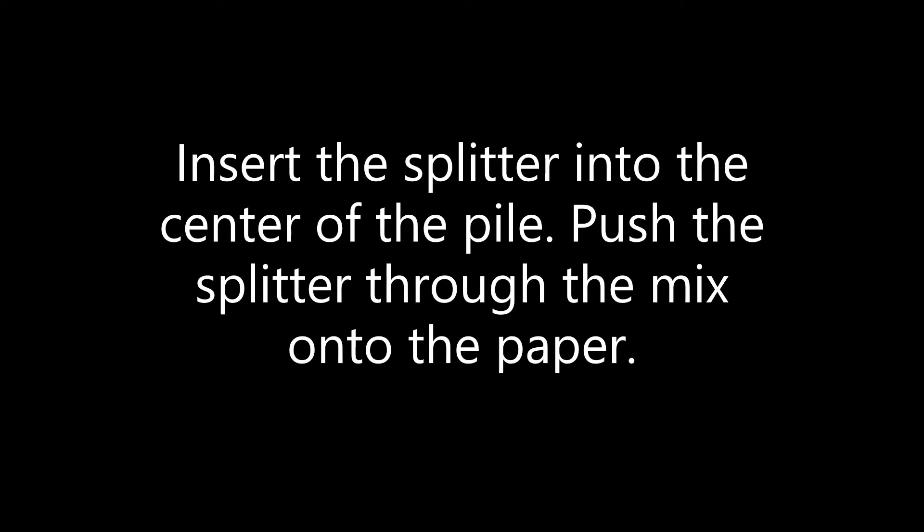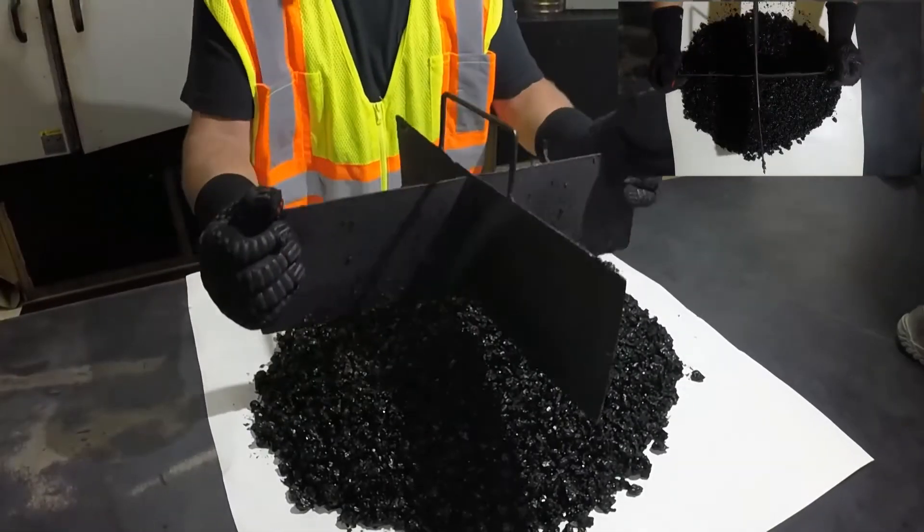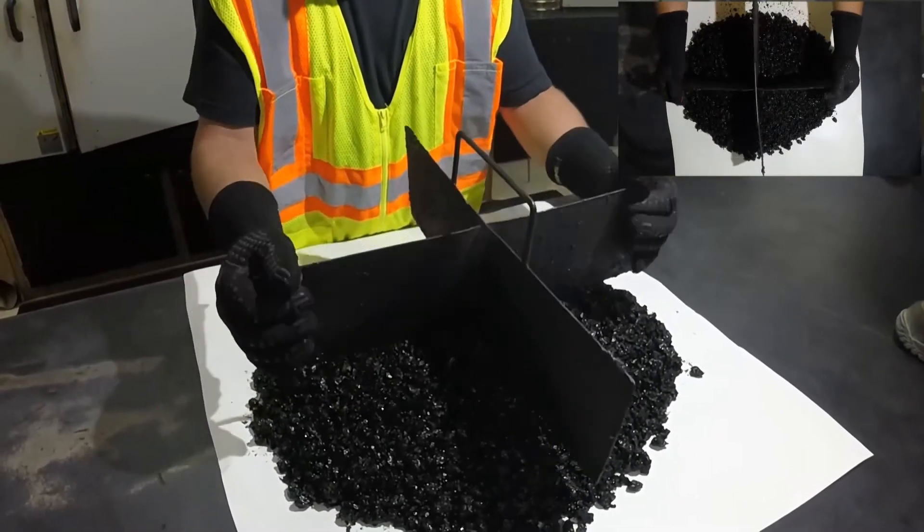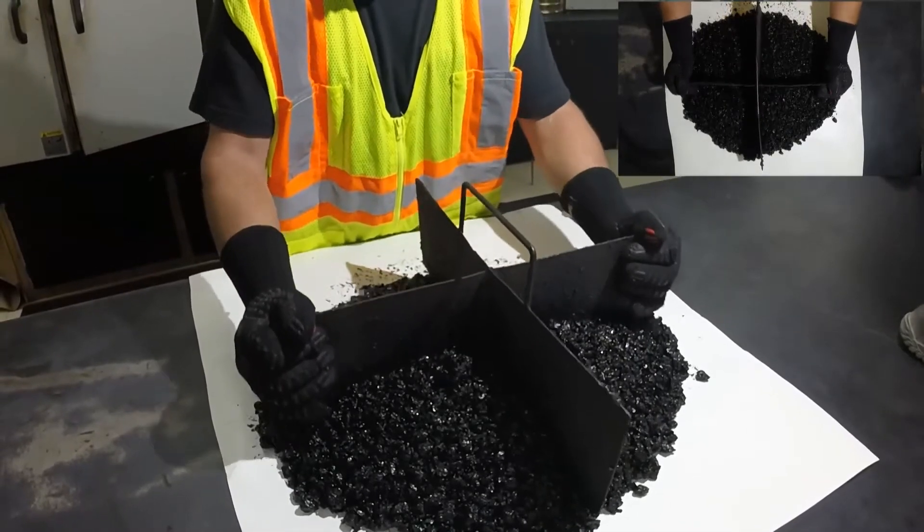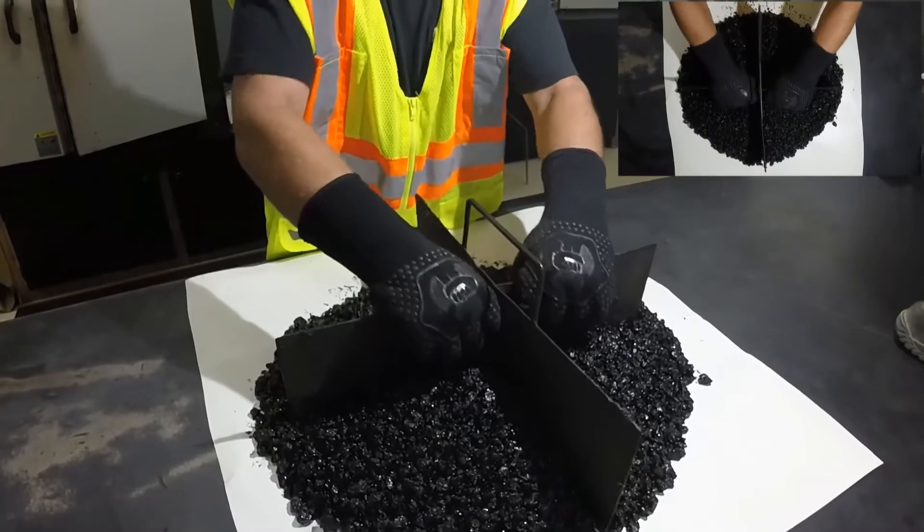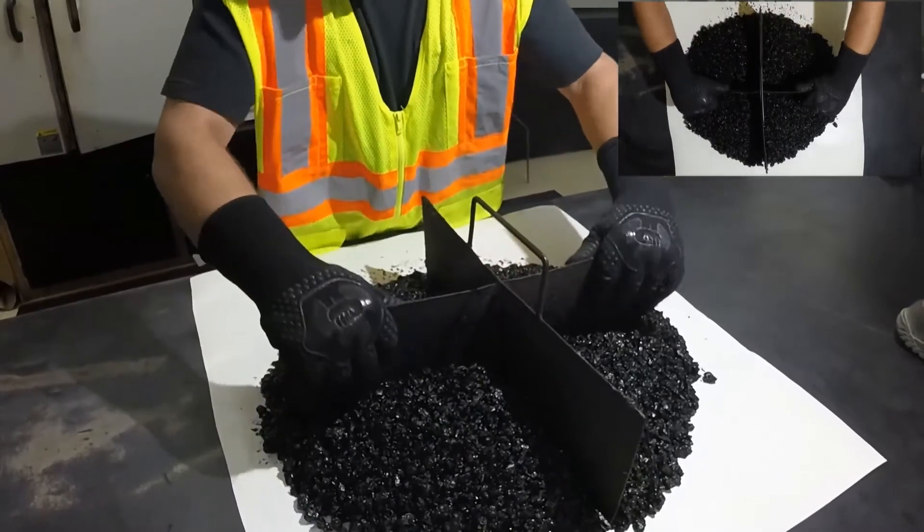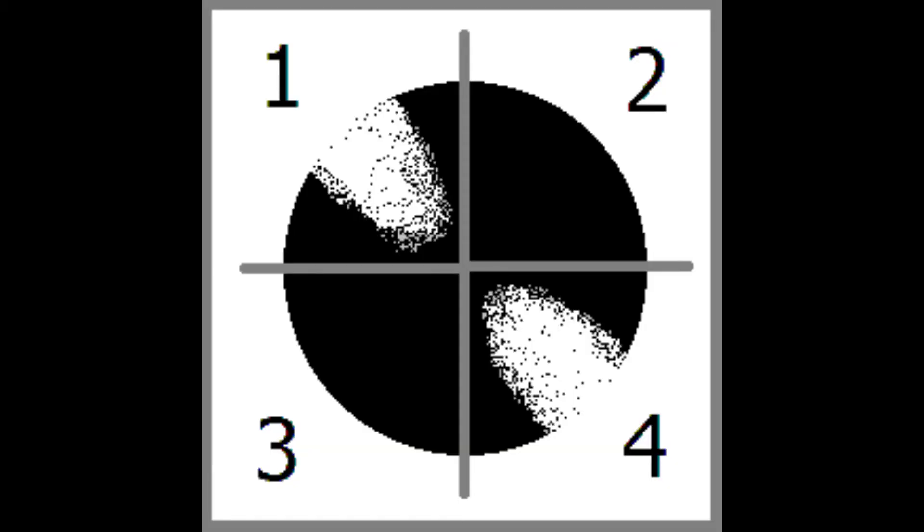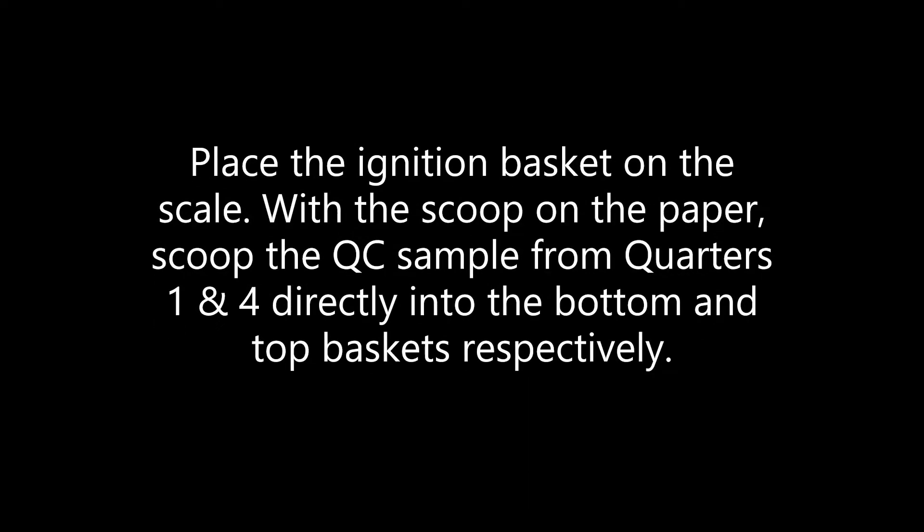Insert the preheated metal cording device into the center of the pile and push down with a rocking motion through the pile to the paper. It is helpful to have a scale adjacent to the paper while reducing the samples to testing size.